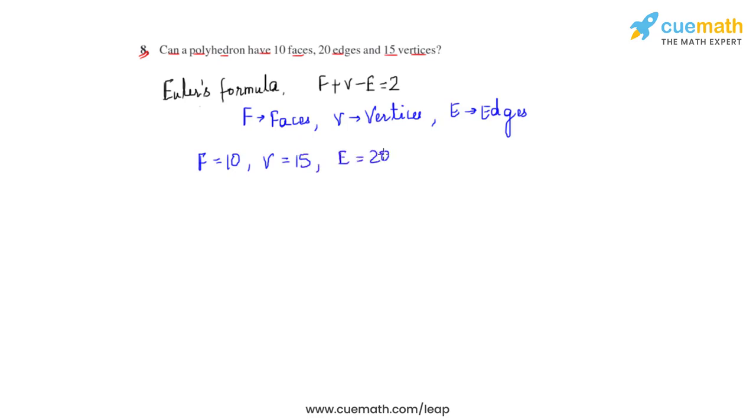So let us take the left hand side of the Euler's formula and we will see whether it satisfies with the values which are given here. So the left hand side of the Euler's formula is F + V - E. Let us substitute the values here. So we get 10 + 15 - 20 which will give us 25 - 20 and hence it becomes 5.